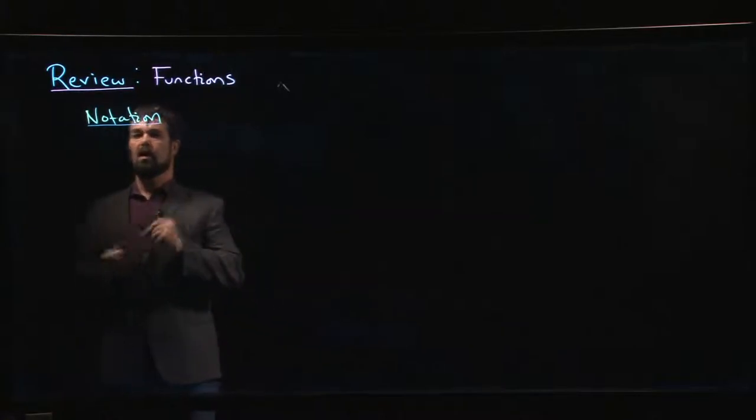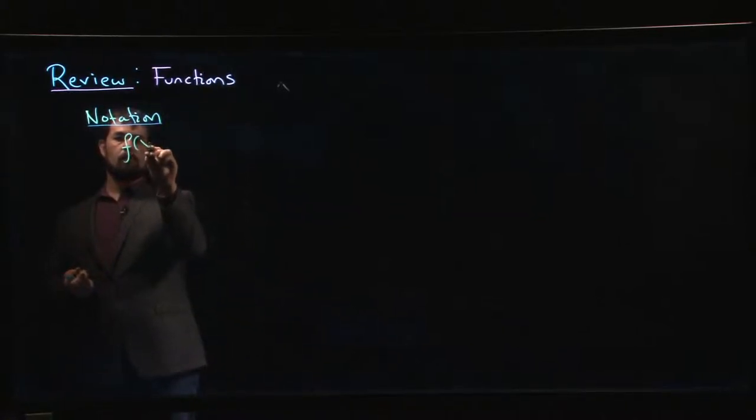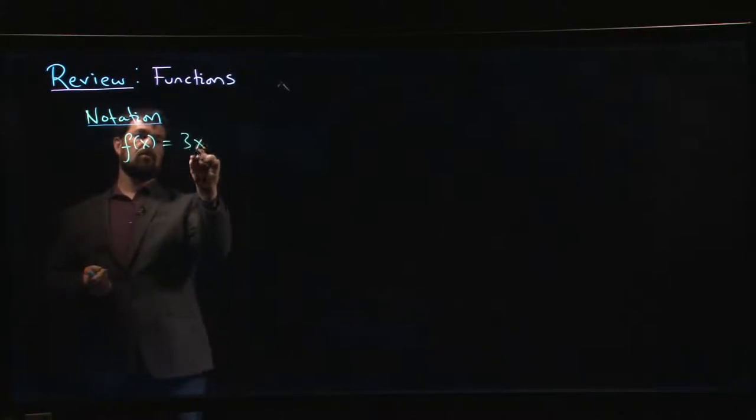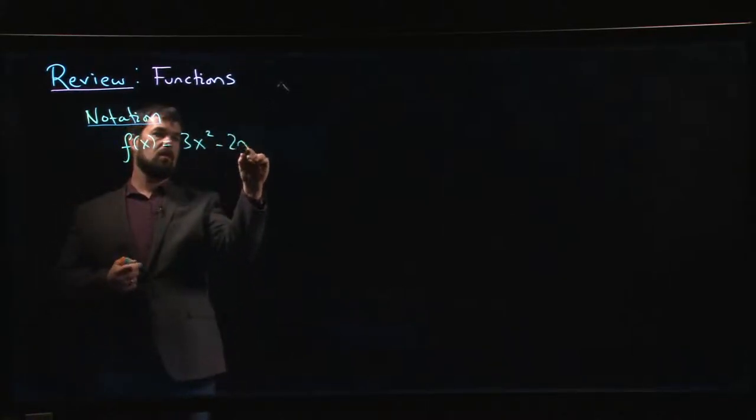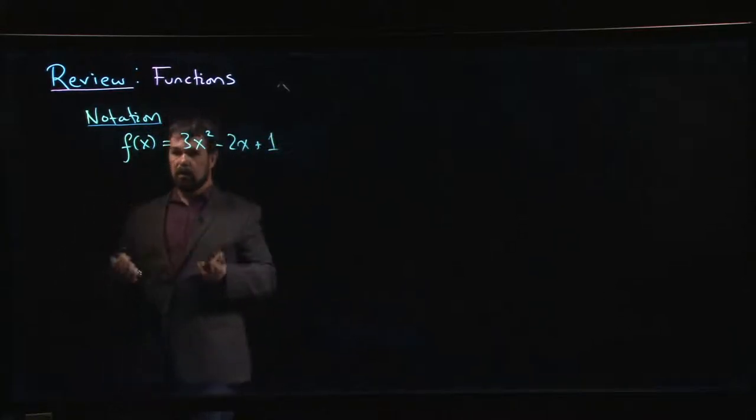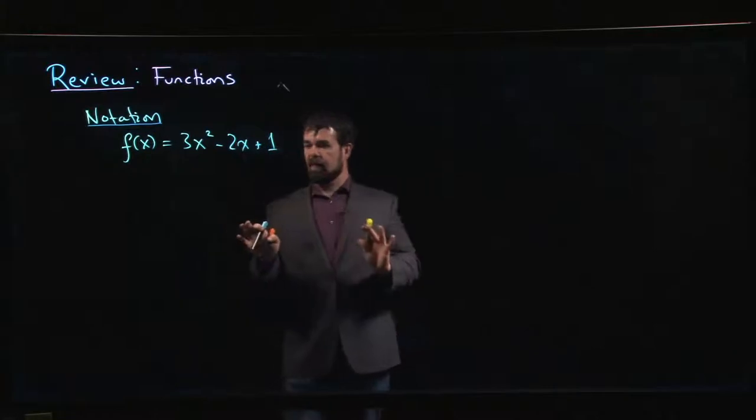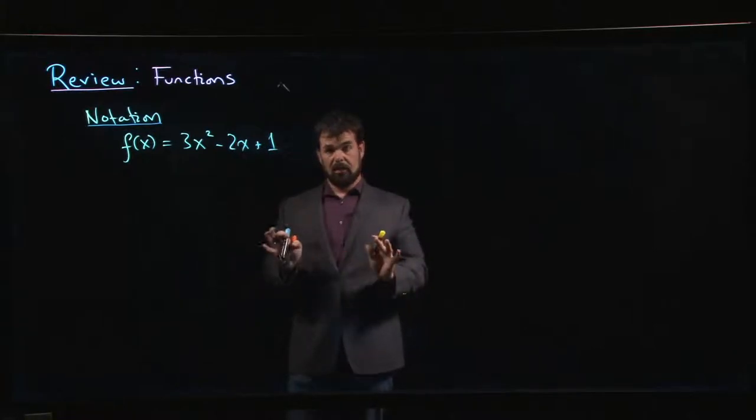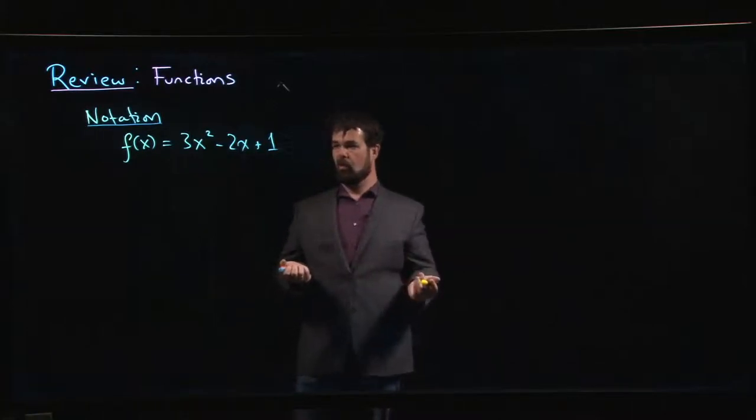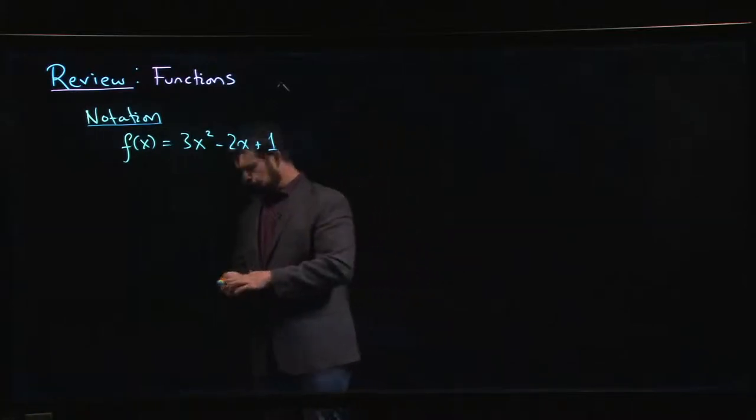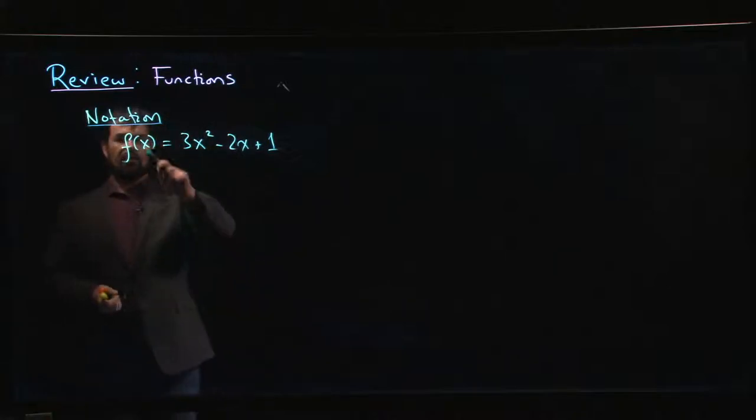So let's say you write down something like f(x) = 3x² - 2x + 1. What does that actually mean? What are you telling me when you write down an expression like this? Well, you haven't quite necessarily told me everything there is to tell about this function, because you haven't said anything about domain or codomain. You've just written down a formula.